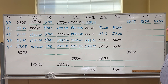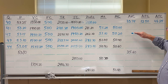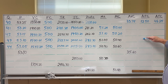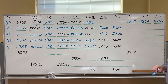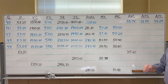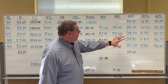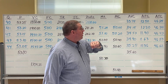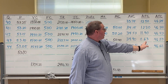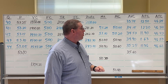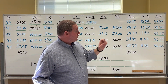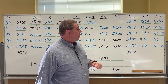Now that you know how to do it, pause the video and calculate average variable cost, average fixed cost, and average total cost for the other four rows. After you pause, I'm going to skip ahead and show all the completed calculations.